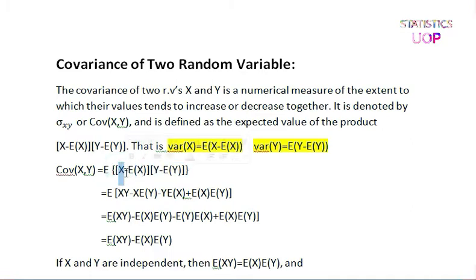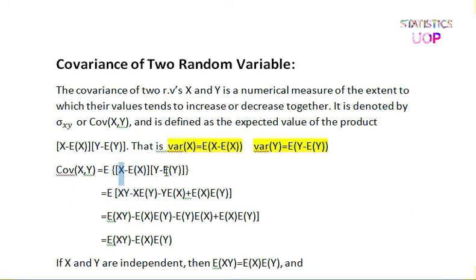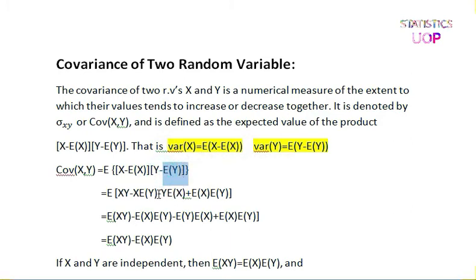When we multiply the two brackets, first X will multiply Y, giving XY. Next, X will multiply the last term, which is the expected value of Y, giving minus X times expected value of Y. Then minus Y times expected value of X. And finally, minus expected value of X times minus expected value of Y — minus times minus becomes plus — giving plus expected value of X times expected value of Y.